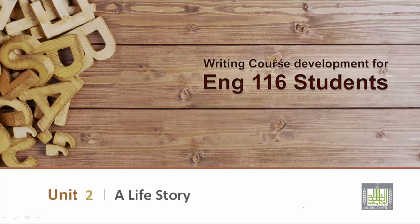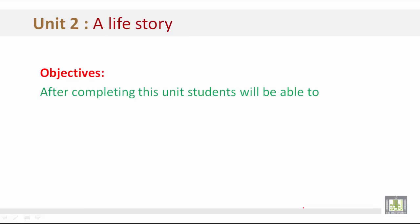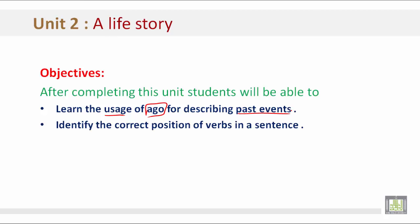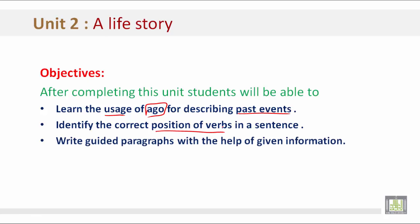Writing Course Development for English 116 Students, Unit 2: A Life Story. After completing this unit, students will be able to learn the usage of 'ago' for describing past events, identify the correct position of verbs in a sentence, and write guided paragraphs with the help of given information.